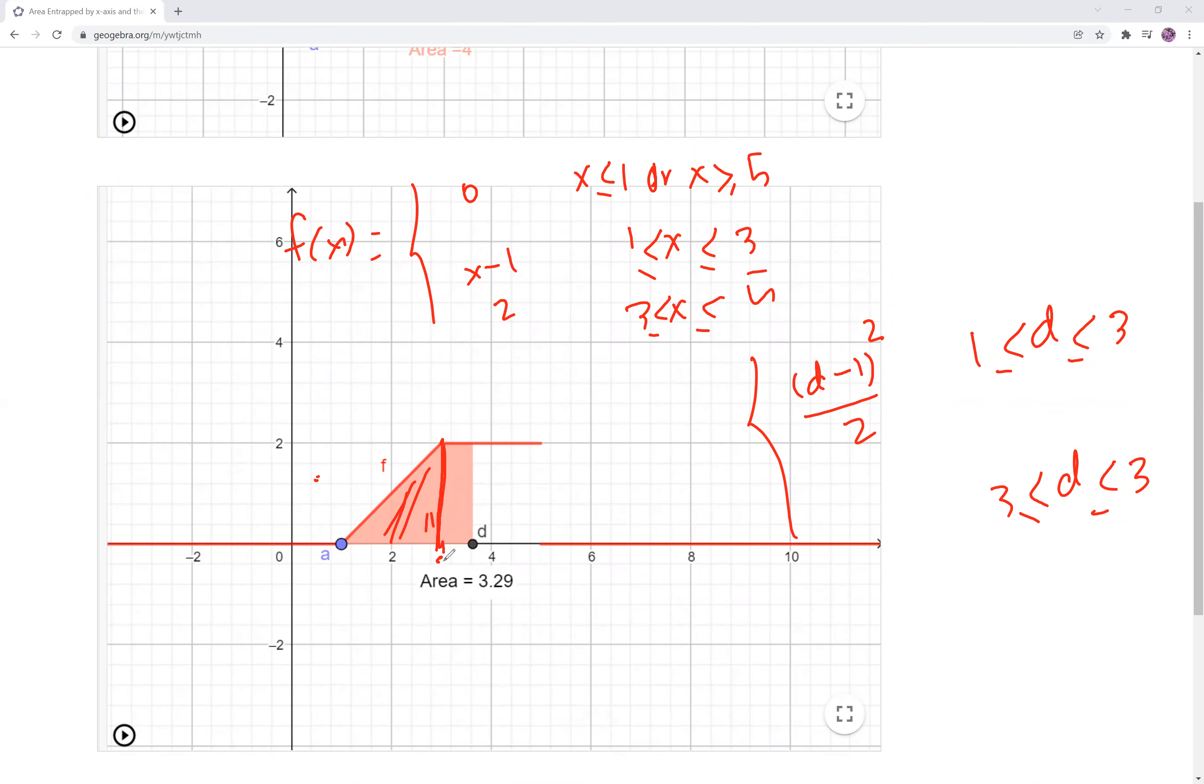And this triangle, and this is 3. So it's 3 minus 1 times 2 divided by 2. That triangle was just 2. And then you have this rectangle sitting here, which is basically d minus 3 times the height, which is 2. So that's the area of that rectangle. So it makes two pieces this time around.